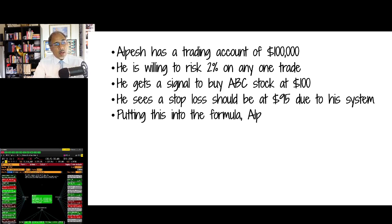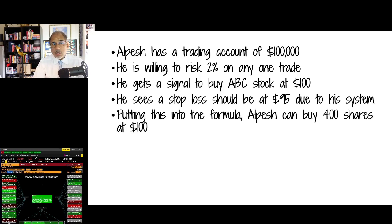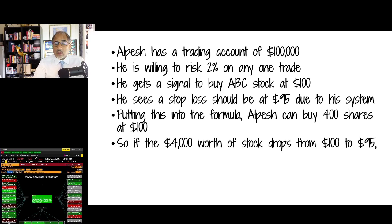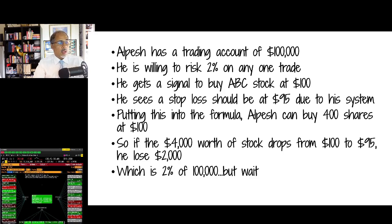Putting all of these numbers into the formula, Alpesh can buy 400 shares at $100. He'll then have $40,000 worth of stock. If it drops from $100 to $95, he loses just $2,000, which is 2% of $100,000.